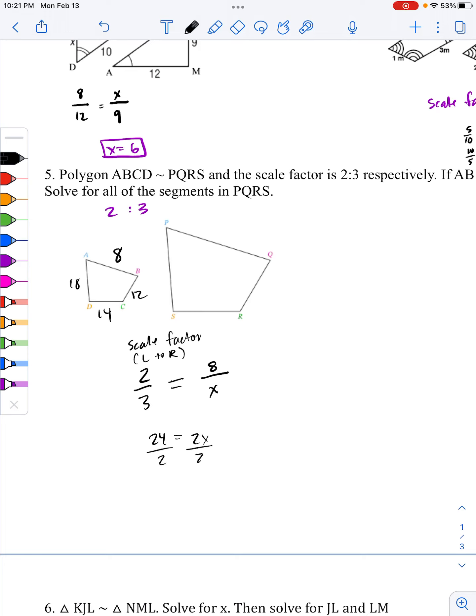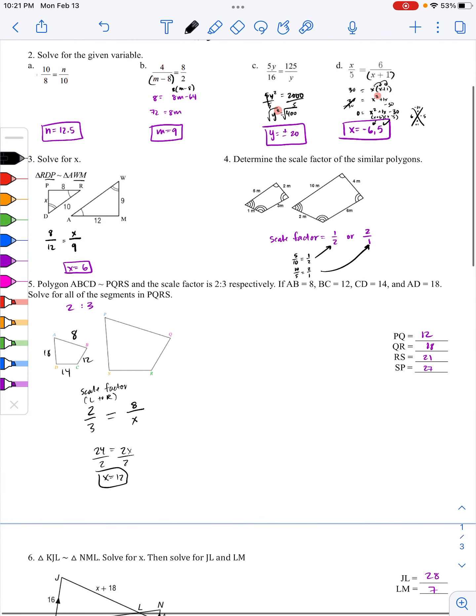And then let's do some cross multiplying. 8 times 3, 24, 2 times X is 2X, divide by 2, and then X is equal to 12. That means PQ is equal to 12.